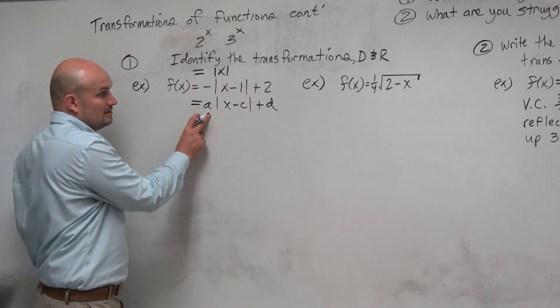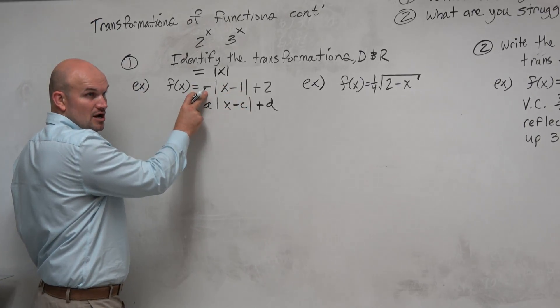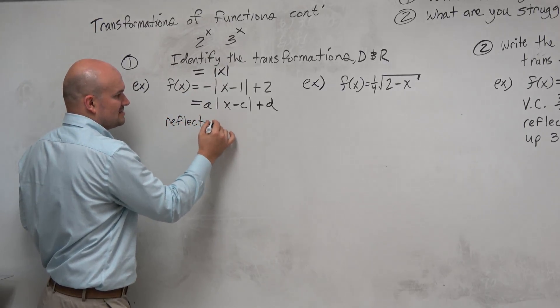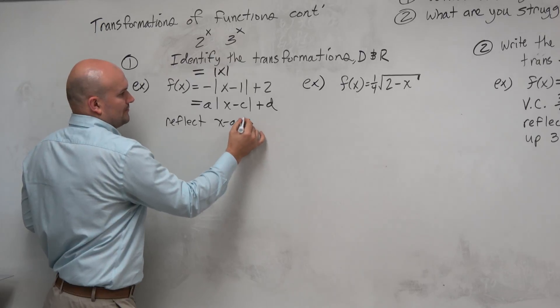So now I can recognize, oh, I have an a. The a is negative. So I remember from my notes, that means the graph is reflected by the x-axis, right?